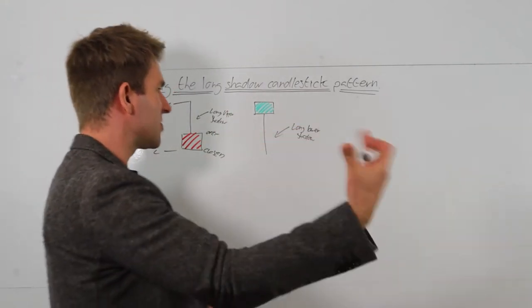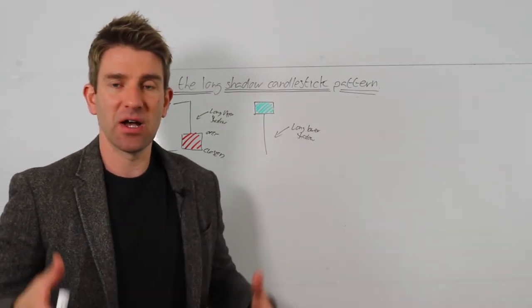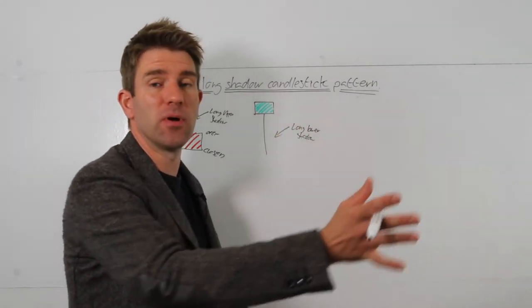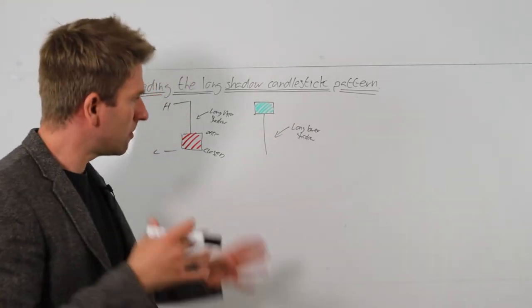And if you look on the bullish side, the long lower shadow, similar thing. You push to the downside, sellers are not that interested, haven't been able to get a closing print down there. It's then pushed back up above the open, so you've got a couple of bullish metrics with that as well.